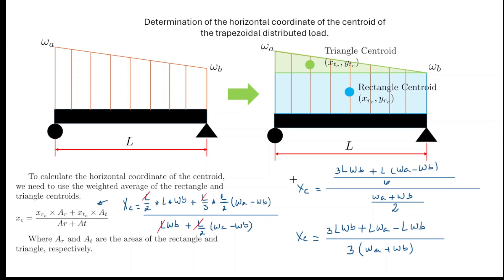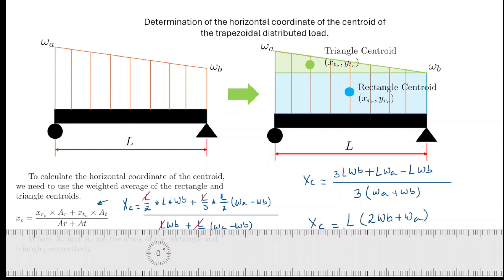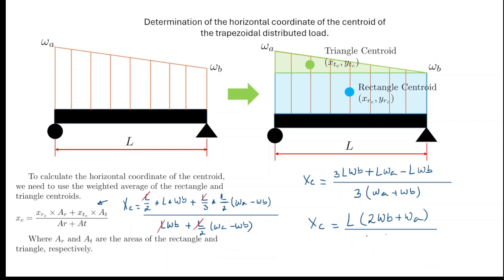Now, if we keep moving things again, I know that 3LWB and I have LWB here, so I can subtract certain units here. So actually I could factor this L and then open parenthesis here. And this is 3WB minus WB is going to be 2WB plus WA. And this is going to divide 3(WA + WB).